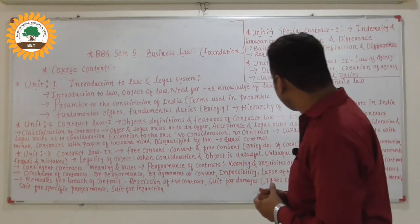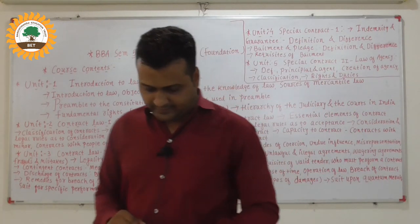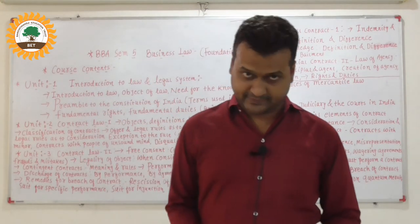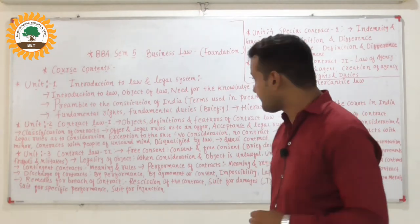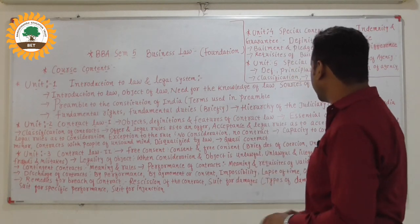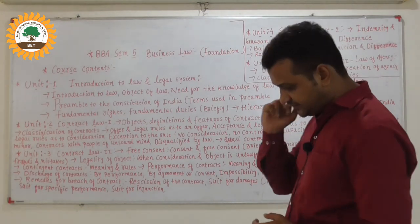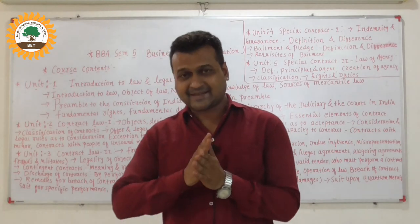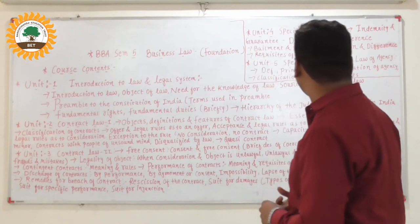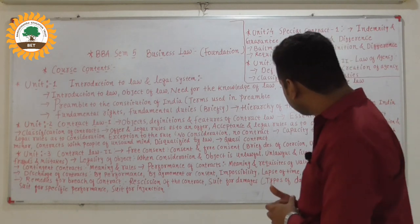Unit 4 is about Special Contracts 1. It covers indemnity and guarantee — you can take the example of general insurance for indemnity. It covers the definition of indemnity and guarantee, the difference between guarantee and indemnity. After that, bailment and pledge — the definition and difference of bailment and pledge, and the different requisites of bailment.